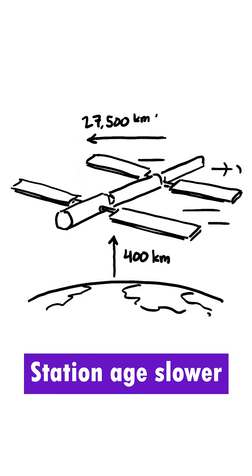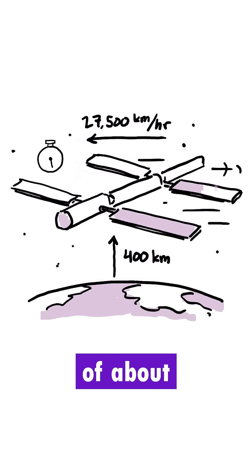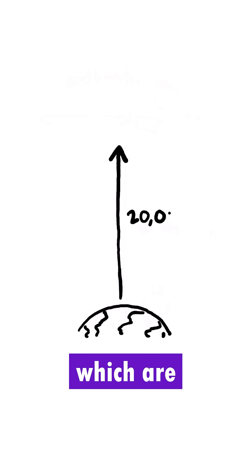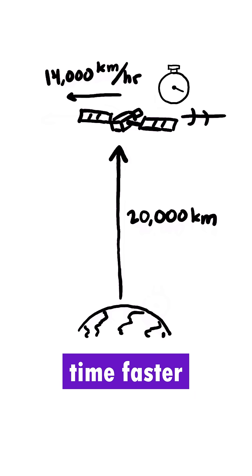For example, astronauts in the International Space Station age slower at a rate of about 27 microseconds each day. But GPS satellites, which are further away and have lower speed, move through time faster, about 38 microseconds per day.